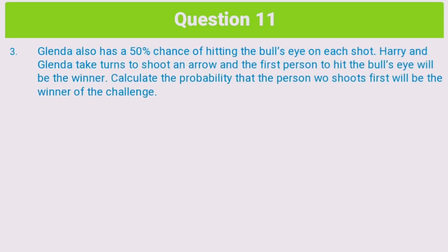Now for the most interesting question of this paper. Glenda also has a 50% chance of hitting the bullseye on each shot. Harry and Glenda take turns to shoot an arrow, and the first person to hit the bullseye will be the winner. Calculate the probability that the person who shoots first will be the winner of the challenge. The best way to explain this is through a tree diagram. We'll assume Harry shoots first, so we'll be calculating the probability Harry will win — which is the same as calculating the probability of the person who shoots first winning.